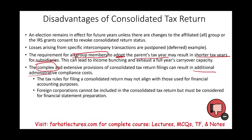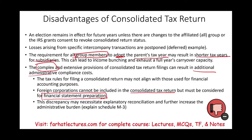If you have a foreign corporation, you cannot include in the consolidated tax return certain income that you show for financial statement purposes. For example, if a company in Mexico is generating revenue, you would report this for financial statement purposes but it is not consolidated for tax purposes, creating a discrepancy. This discrepancy will necessitate explanatory reconciliation, which you'll have to explain on Schedule M3. When you consolidate, you will have some complications — this is a disadvantage of consolidation.